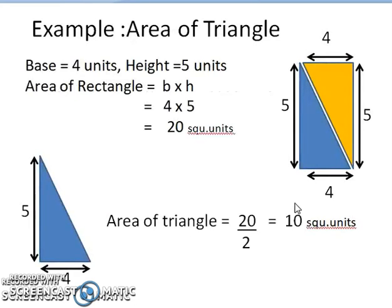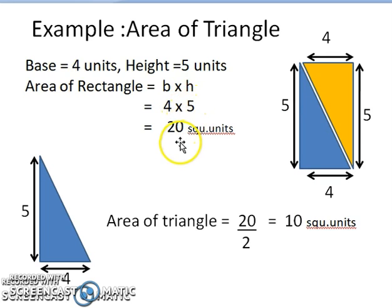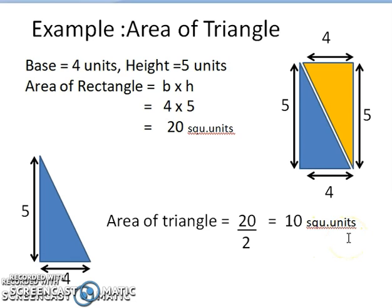Let us see this through a given example. A triangle has a base of 4 units and a height of 5 units. The area of the rectangle is base times height, so 4 times 5 equals 20 square units. To find the area of the triangle, divide the value by 2: 20 divided by 2 equals 10 square units. Hope you understand the concept.